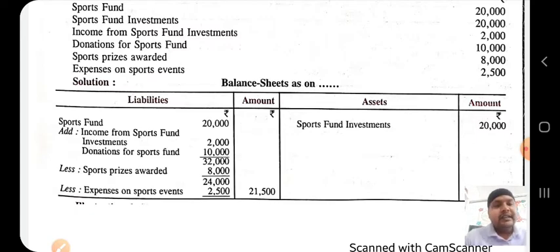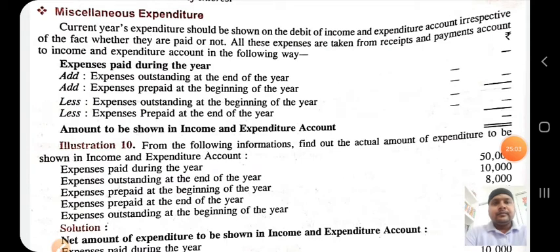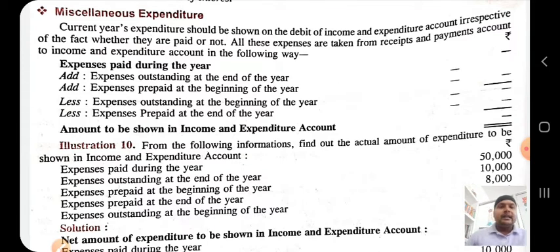So if we create a specific fund, any income or expenses related to it will be added and deducted respectively from that specific fund. We will now move to the next topic of this chapter — miscellaneous expenditure. Miscellaneous expenditure includes expenses paid in advance or not paid within a year, known as prepaid expenses or outstanding expenses. We will discuss how to deal with such expenditure in our books of account.